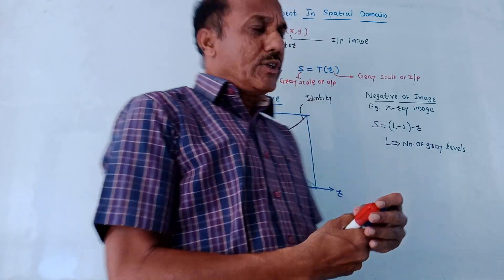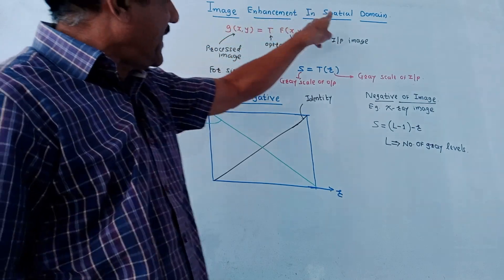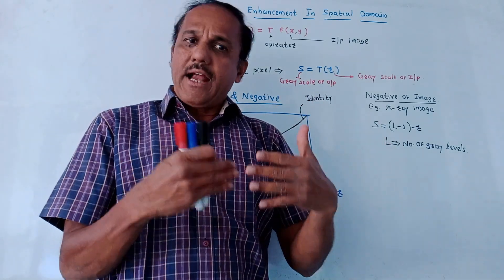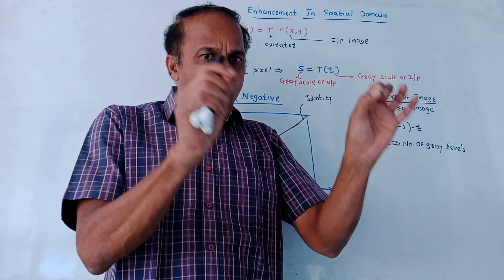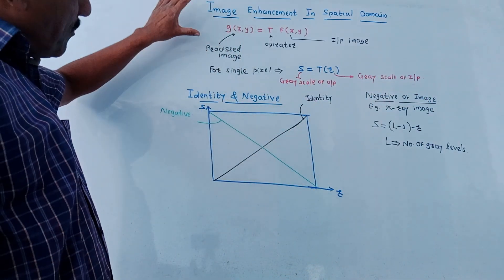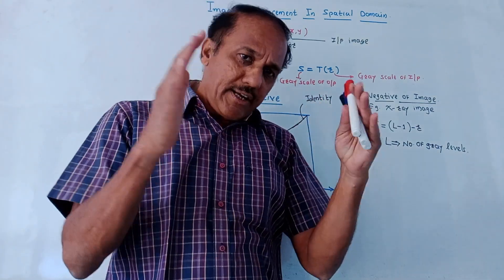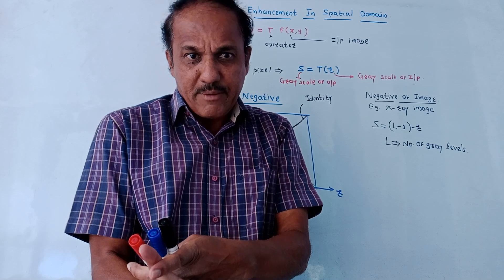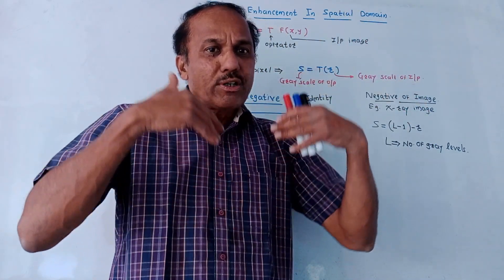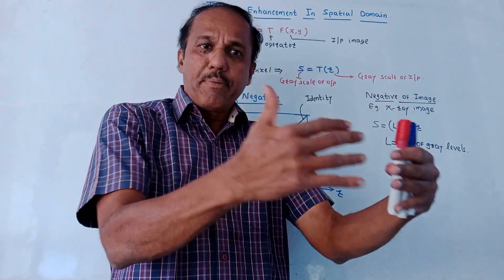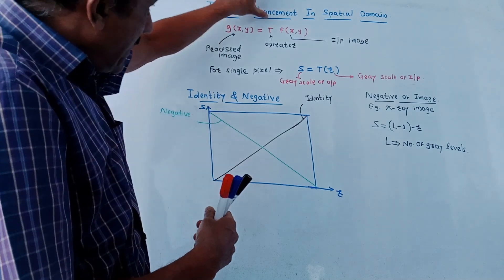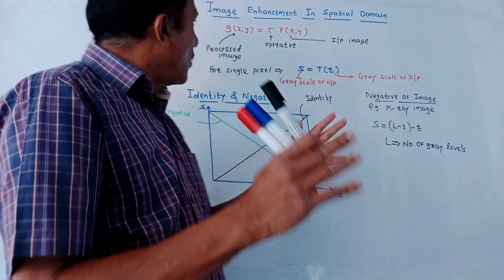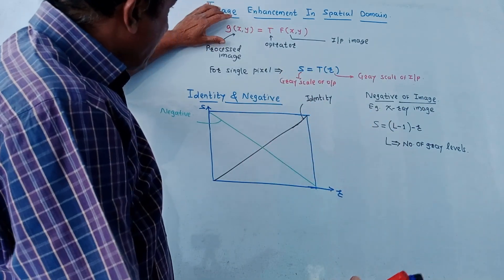Hello and welcome back to this channel. This topic is image enhancement in the spectral domain. We'll discuss what image enhancement means and the different methods related to point processing. Image enhancement means processing an image — making modifications so that the modified image will be more suitable for a particular application compared to the original image.